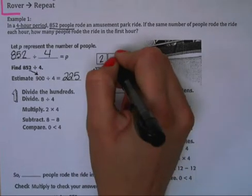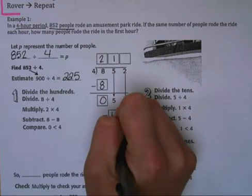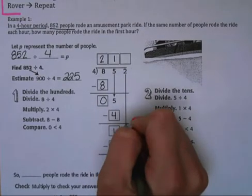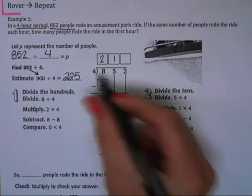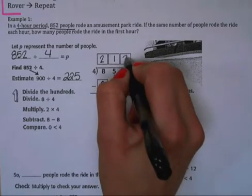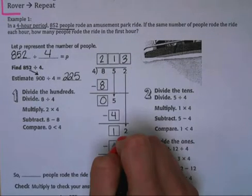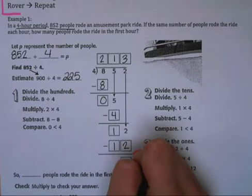4 goes into 5 one time, so we have 5 minus 4, which gives us 1, and we bring down our 2. So we have 12 divided by 4, that goes in there 3 times. 4 times 3 is 12, so 12 minus 12 is 0.